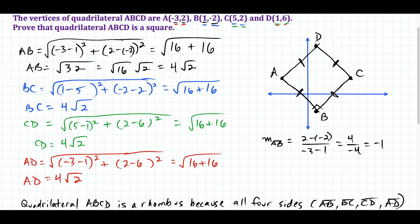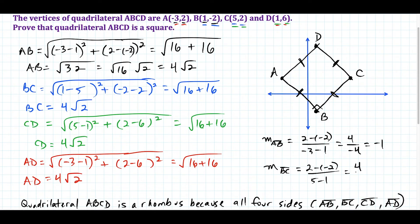Looking at AB, you can see it's going down 1 over 1, which confirms the slope is negative 1. Now for the slope of BC: the difference of the y values, 2 minus negative 2, divided by 5 minus 1. This works out to positive 4 over positive 4, which is positive 1. The first thing that jumps out is that these slopes are opposite reciprocals of each other, which means these two lines are perpendicular — which means angle B is a right angle.